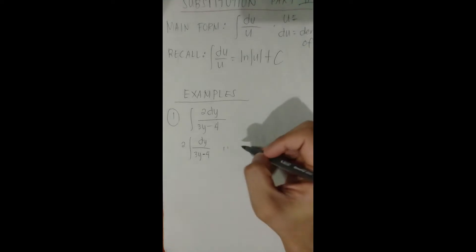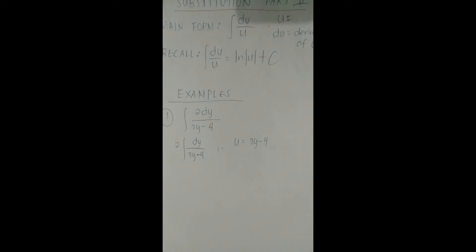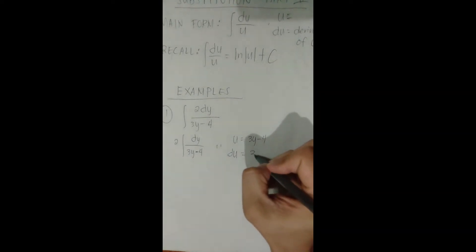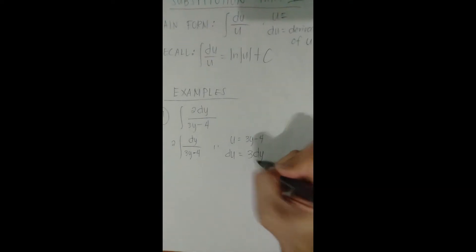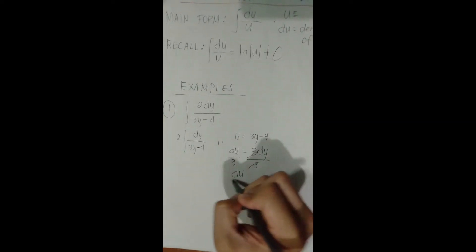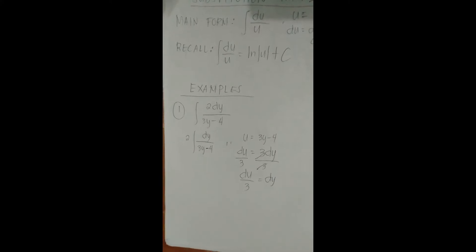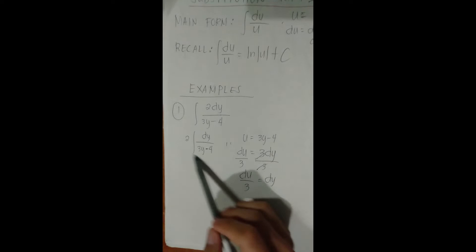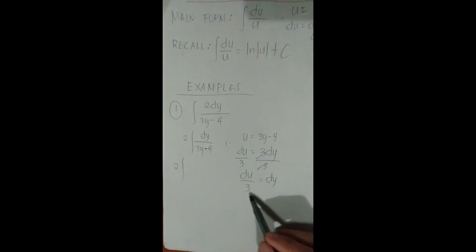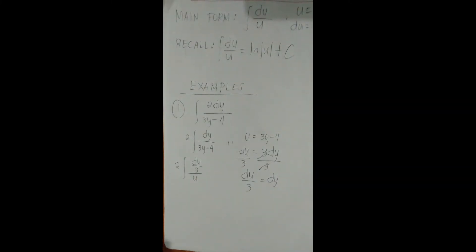We let u = 3y − 4. Taking the derivative: du = 3 dy. Dividing both sides by 3: du/3 = dy. Now we substitute: replace dy with du/3 and (3y − 4) with u. The integral becomes 2 · integral of (du/3) / u.